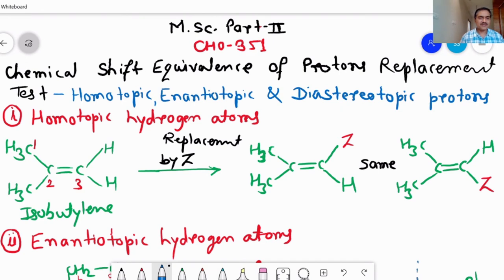Here the protons which are attached to the third carbon atom, we replace one by one. So first of all, when you consider the first example where hydrogen is replaced by Z, and in the second also hydrogen is replaced by Z, but the first example and second example after replacement of Z are the same. As such, this type of proton is called homotopic hydrogen atoms.